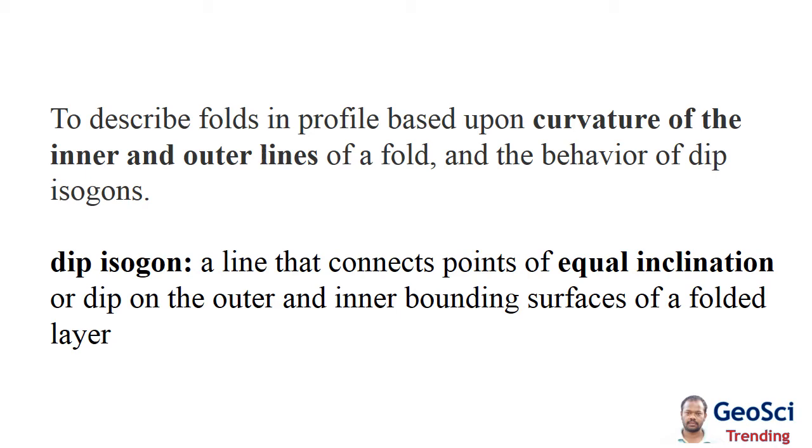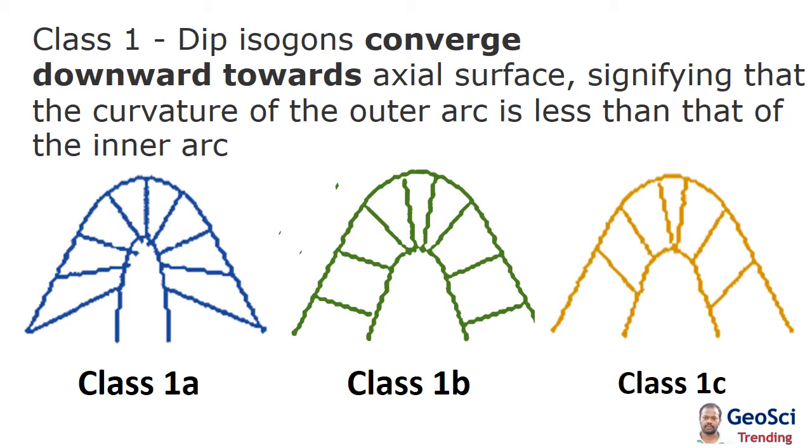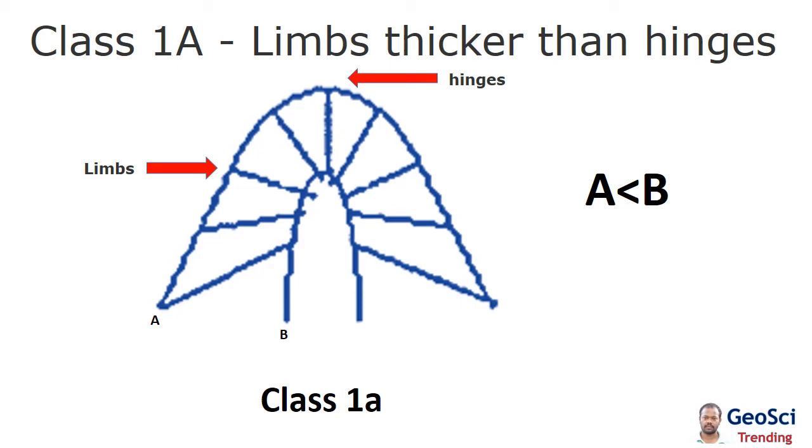There are three major classes divided today: Class 1, Class 2, and Class 3, based on curvature. Class 1 dip isogons converge downward toward the axial surface, signifying that the curvature of the outer arc is less than that of the inner arc. Class 1a has limbs thicker than hinges.